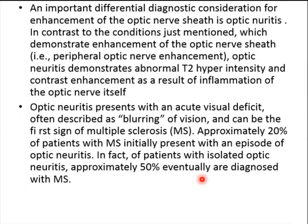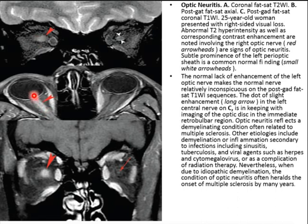An important differential for enhancement of the optic nerve sheath is optic neuritis, which demonstrates enhancement of the optic nerve sheath and hyperintensity and contrast enhancement of the optic nerve itself due to inflammation. It may cause acute visual deficit described as blurring of vision and can be the first sign of MS: about 20% of patients with MS initially present with optic neuritis, and up to 50% of patients with isolated optic neuritis will eventually be diagnosed with MS. In this case, the optic nerve is inflamed, swollen, and edematous compared to the contralateral normal optic nerve, suggesting optic neuritis. We should look carefully for other signs of multiple sclerosis.